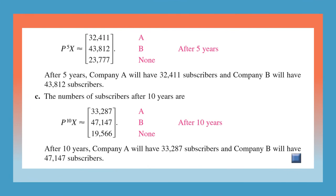If we are trying to find after five years, we have to find P raised to 5X. So the number of subscribers after five years will be in company A, 32,411, in company B, 43,812.